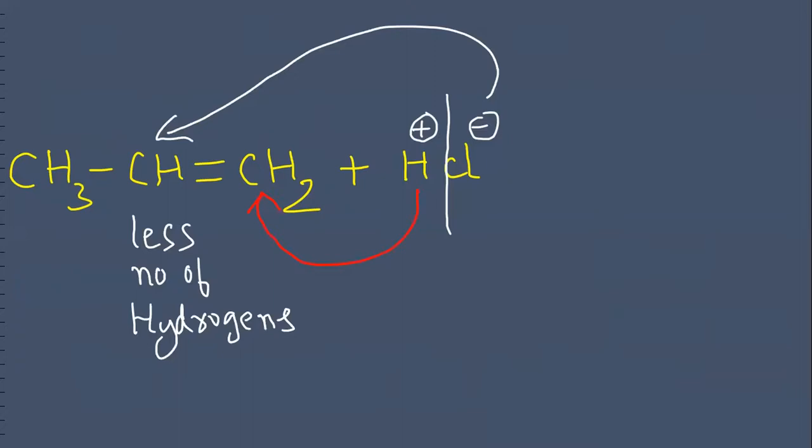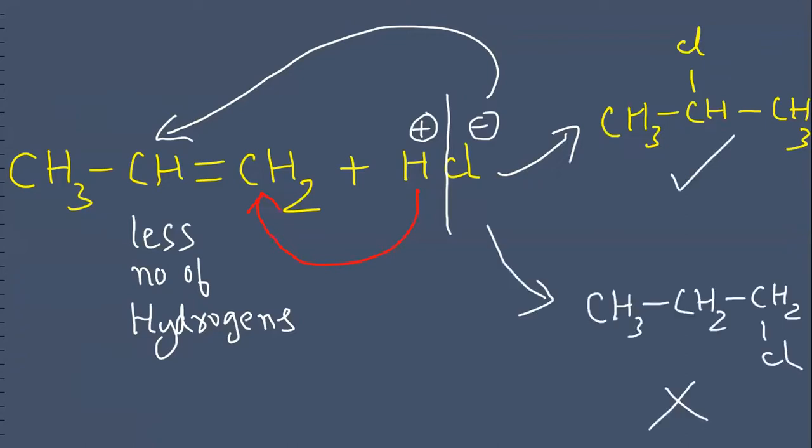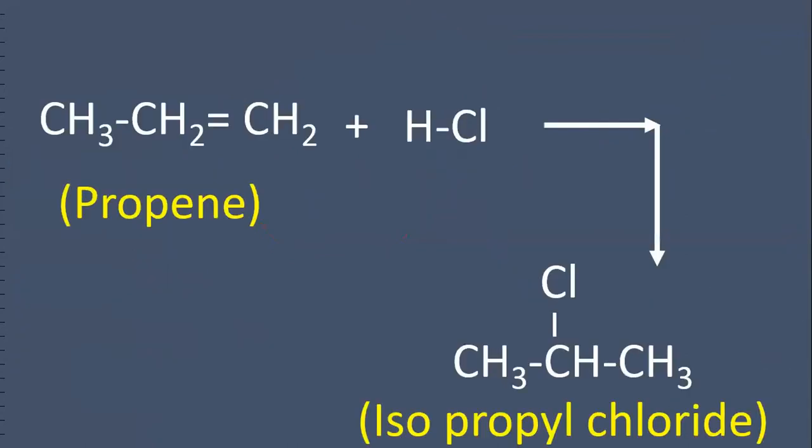The first carbon is not under competition because it is already saturated. So this is the product. The second one is wrong. Propene reacts with HCl, we get isopropyl chloride. It is also called 2-chloropropane.